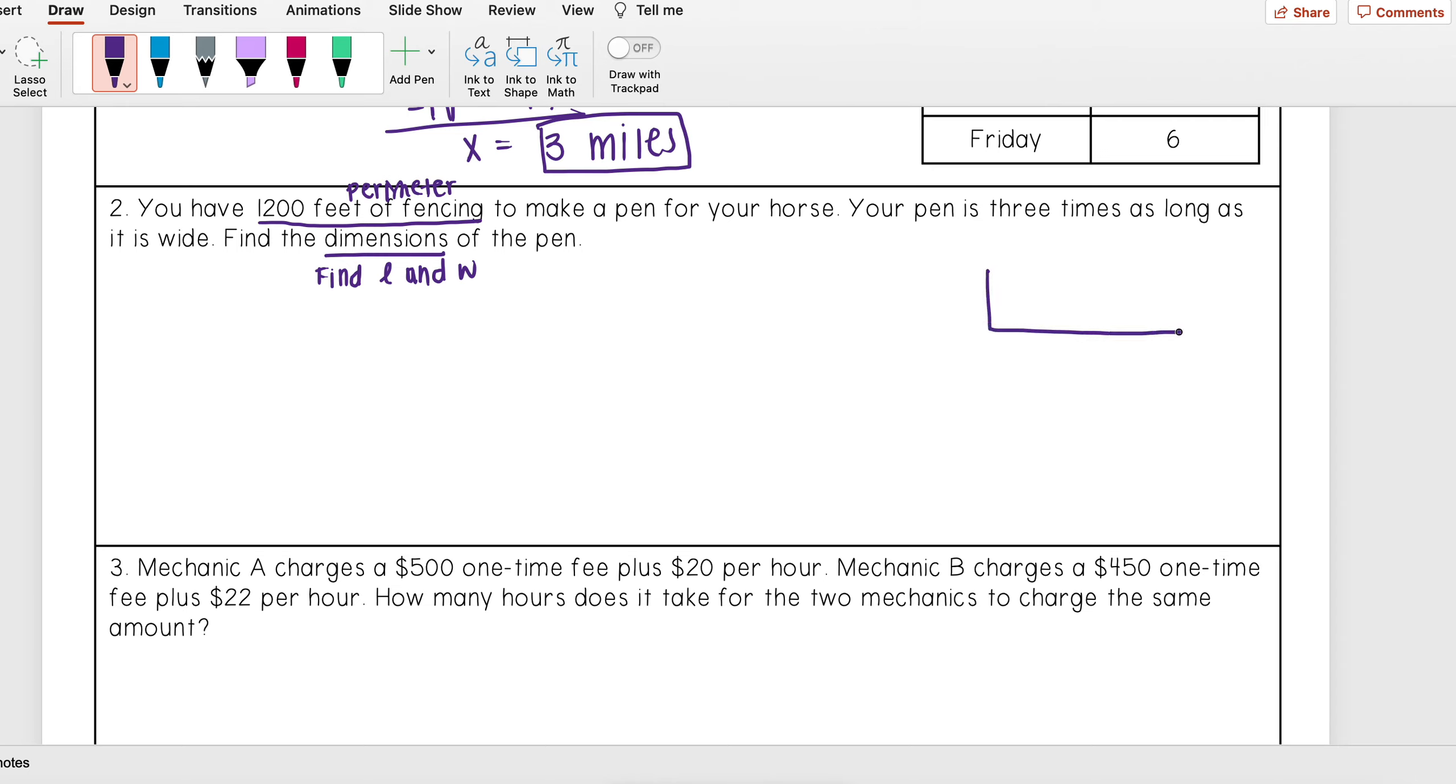So I have a pen, and in total all around this pen is 1200, and then it says that my pen is 3 times as long as it is wide. So I don't know my width. I need to find that, so I'm just going to label that as W. But I know that the length is 3 times as long as it is wide, so that means that my length is going to be 3 times W.